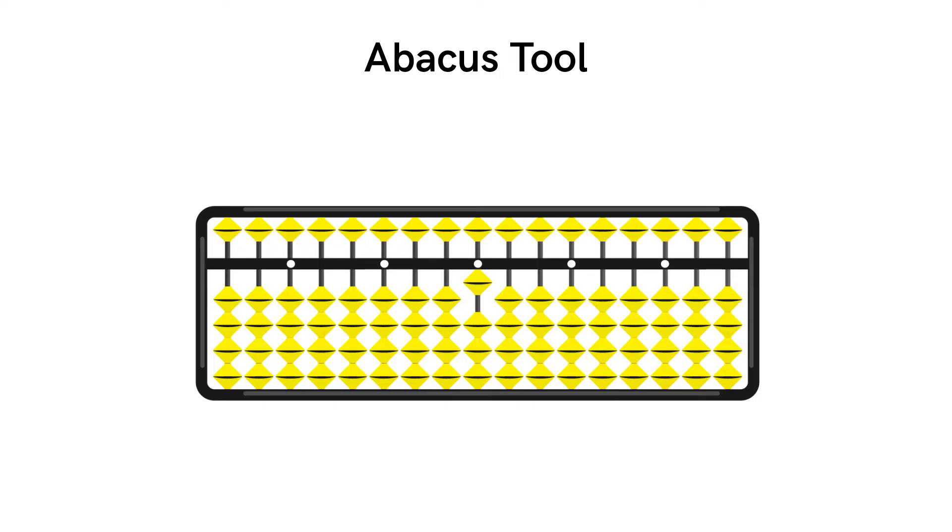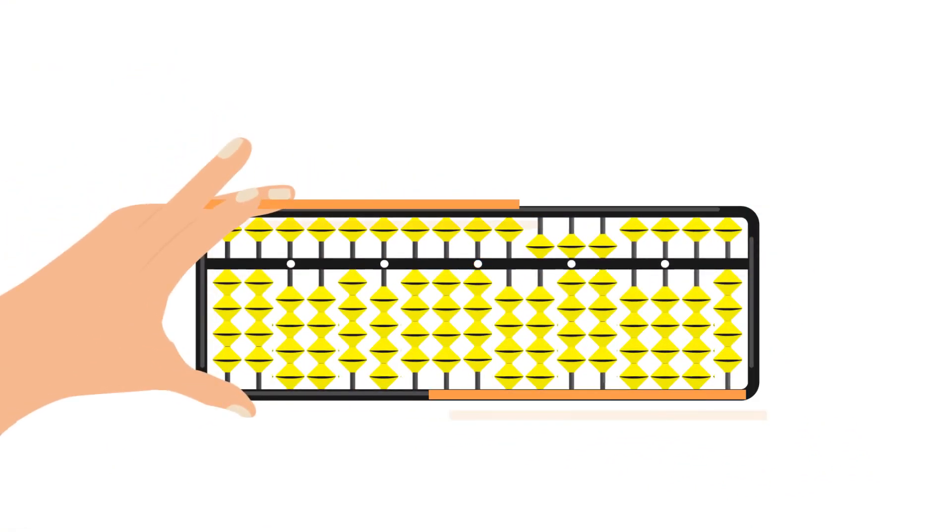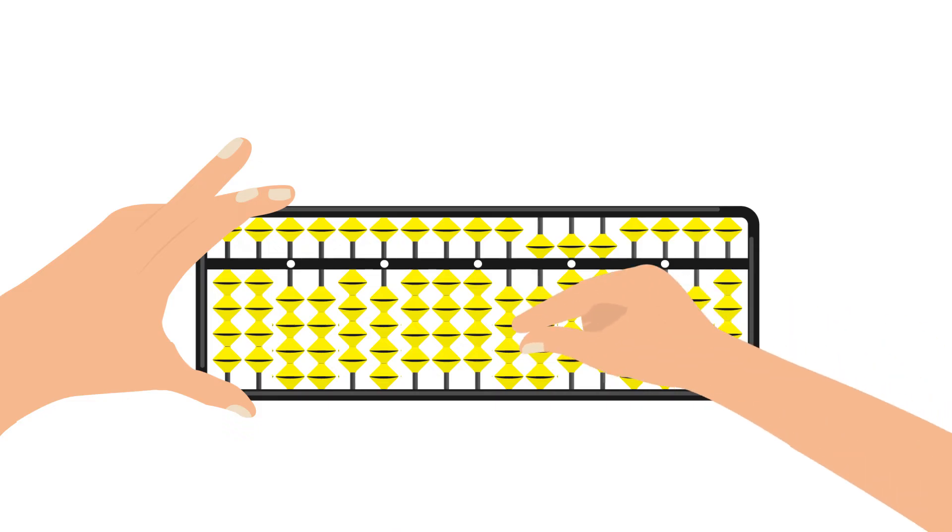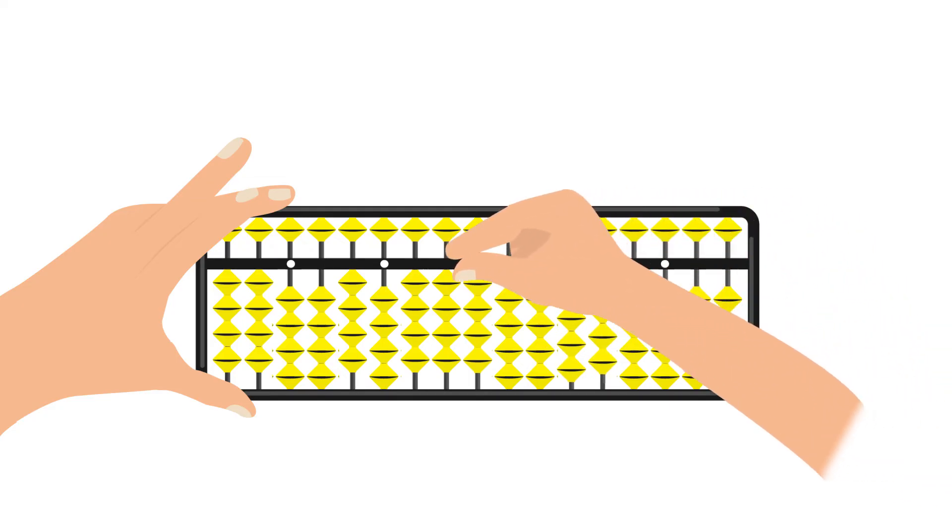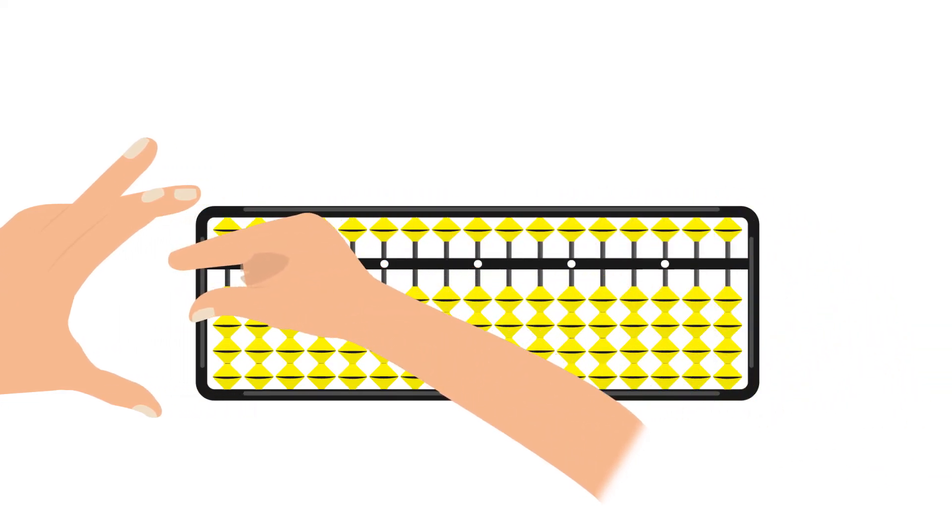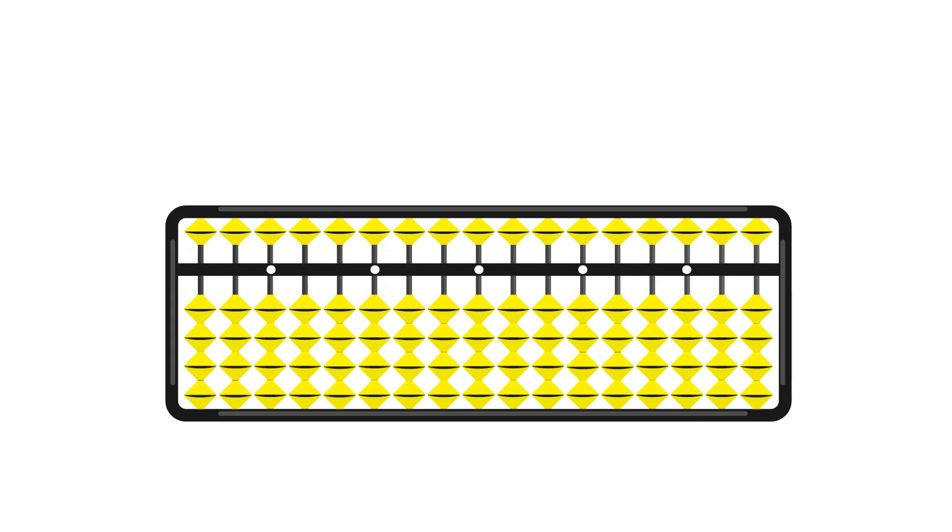Remember children, whenever we want to work on the abacus, the value should be zero. Making the abacus value zero is also called clearing the abacus. To clear the value, we make a pinch using the index finger and the thumb of our right hand and move it along the counting bar. When we do this, all the beads move away from the counting bar.